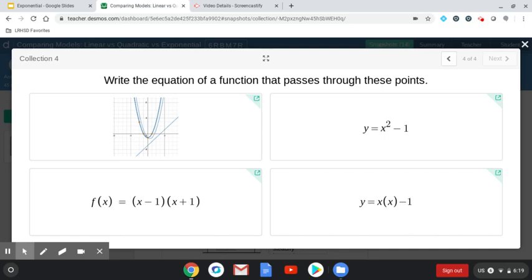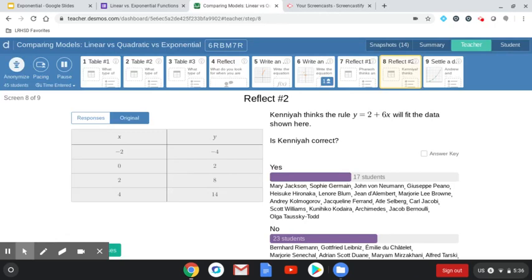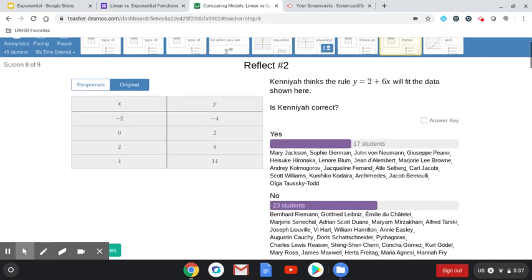And then the last two Desmos screens that I wanted to talk about were these last two reflections. One was about Kanaya here, thinking that the rule Y equals 2 plus 6X will fit that data, and whether she was correct or not. So I thought it was really interesting how kind of split down the middle all of our Algebra 2 students were—17 students thought yes and 23 thought no. So if I click answer key here, we'll figure out who was correct.